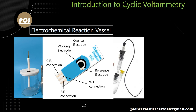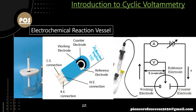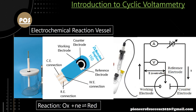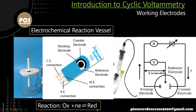Now I come to the topic of the electrode setup. Before that, let me talk about the three electrodes and the reaction. A typical reaction on a working electrode is: OX + ne⁻ → RED, where OX is the oxidant and RED is the reductant. This reaction may be reversible, irreversible, or a branched reaction. The three electrodes are: the working electrode, the reference electrode, and the counter electrode.